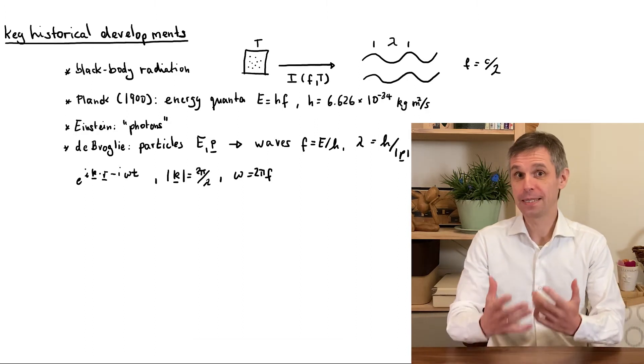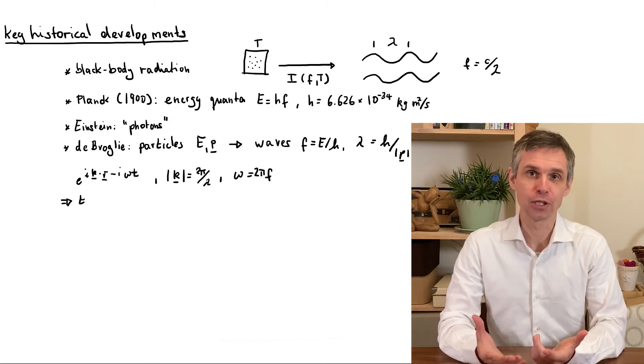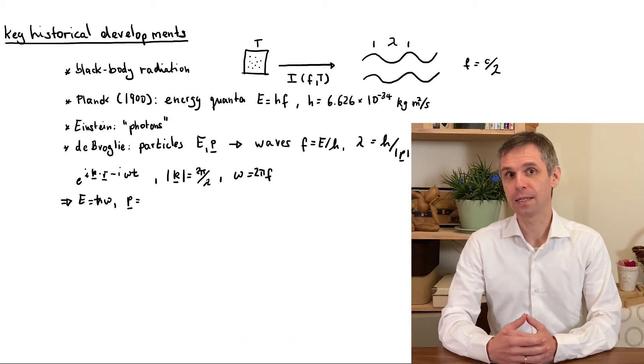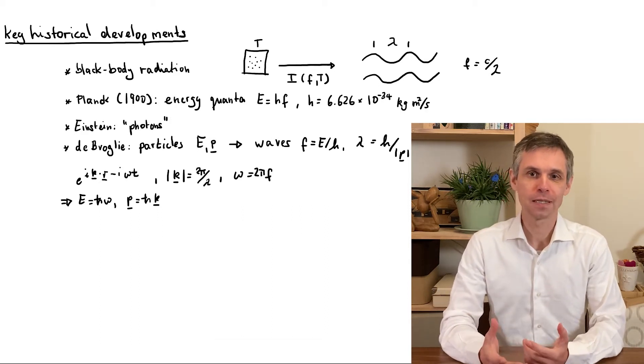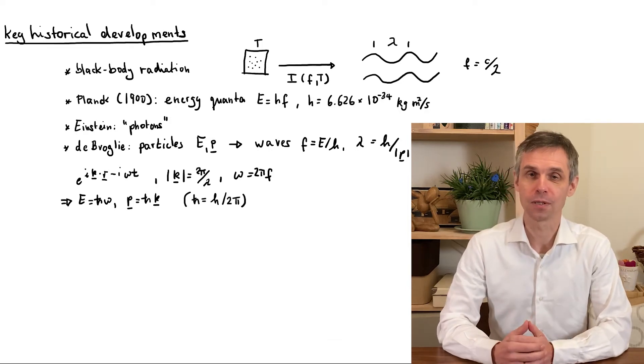In terms of these quantities, the Planck and de Broglie relations read as energy E equals ℏω, momentum p equals ℏk, where ℏ is Planck's constant divided by 2π and is known as the reduced Planck's constant.